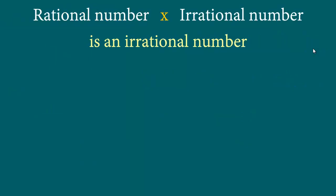Let's take some examples. Let's say we have the number 2 and we multiply that by square root of 7, and we want to prove that this is actually an irrational number. We are going to prove by contradiction — we assume it is a rational number and prove that assumption is wrong. So let's say this is a rational number; then we can write it in the form a divided by b, where a and b are both integers, b not equal to 0, and they do not have any common factors.